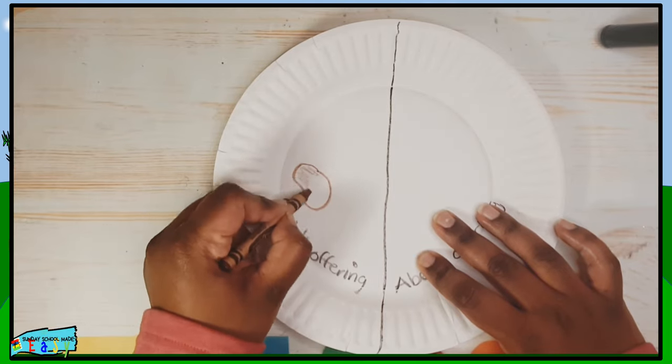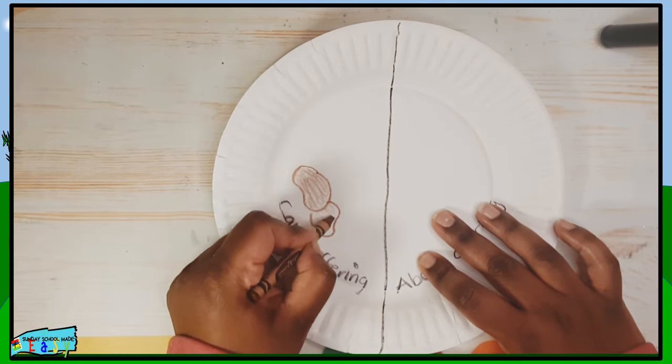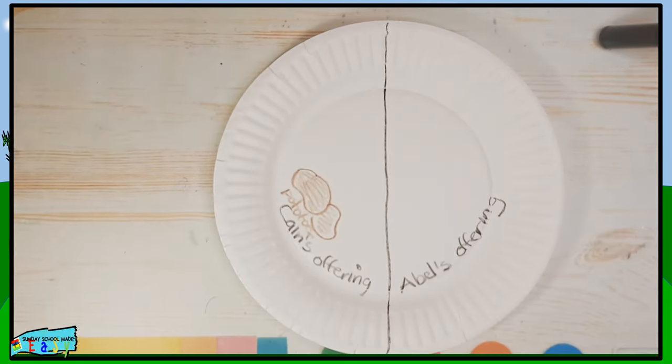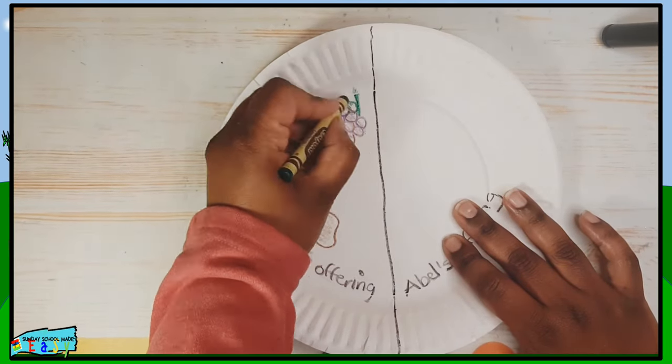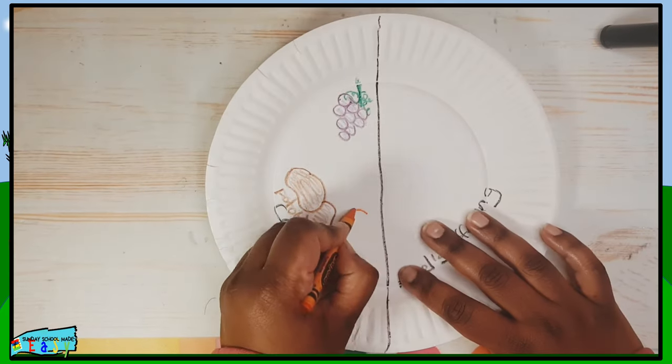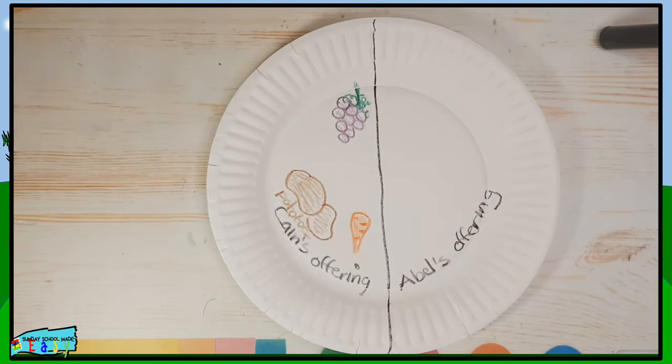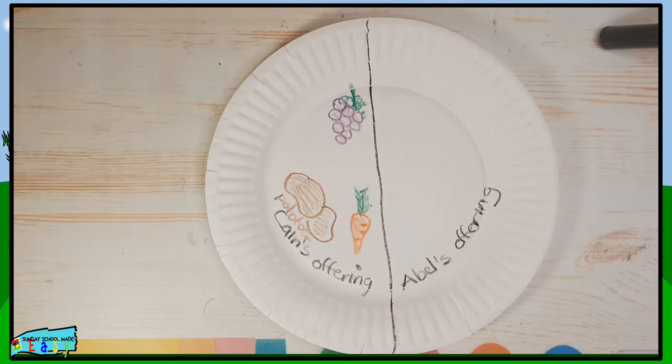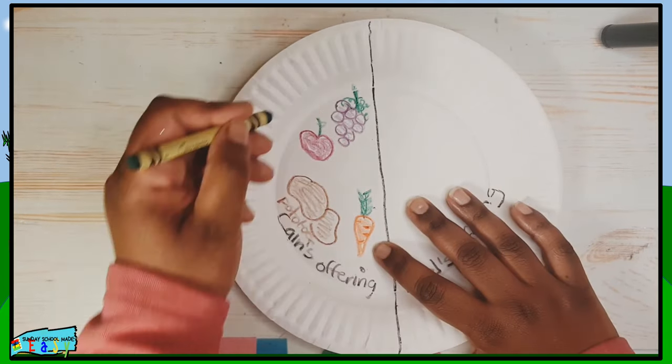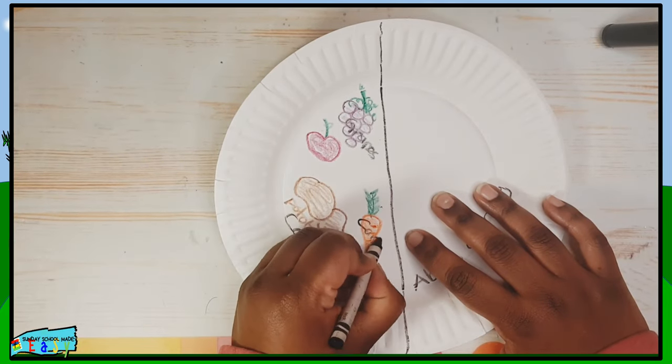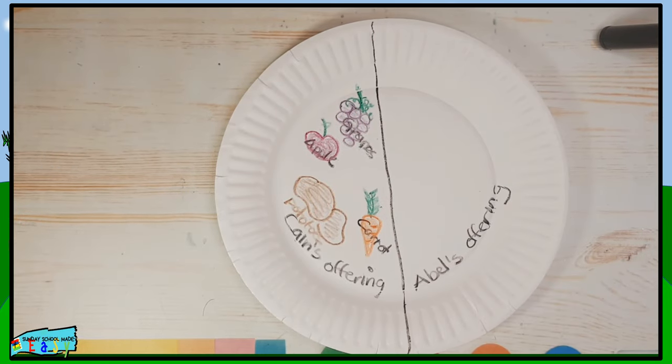Now on Cain's offering because we know he worked on the soil so he would have fruits and vegetables. We're just making anything that's really simple for the kids to do. Draw potatoes, carrots, grapes, bananas, whatever they can think of that is what we're going to put on Cain's side.